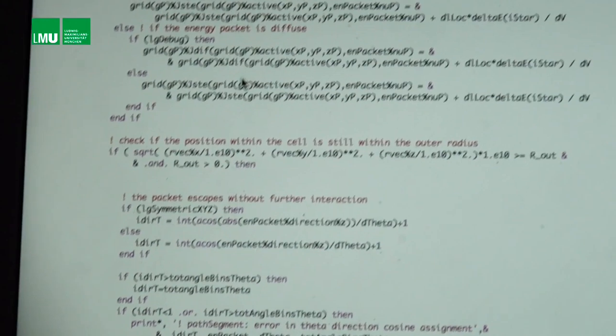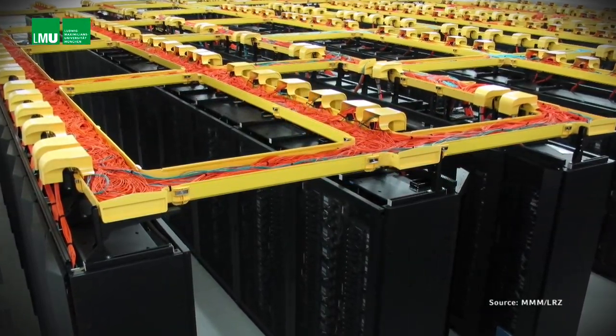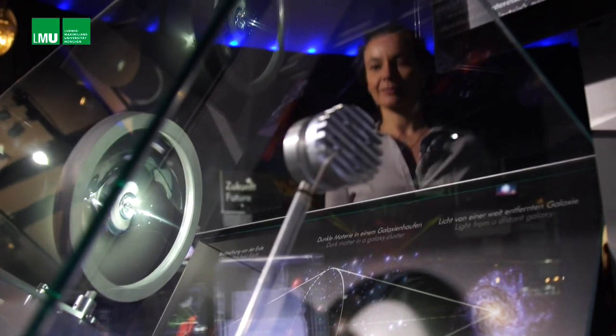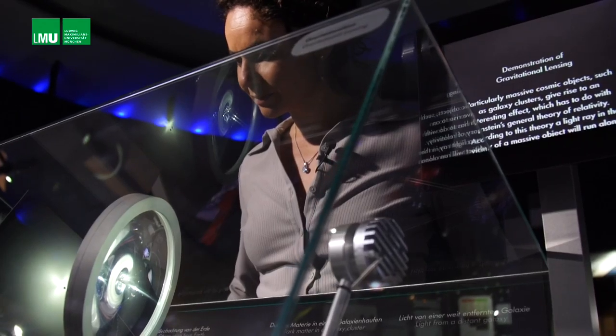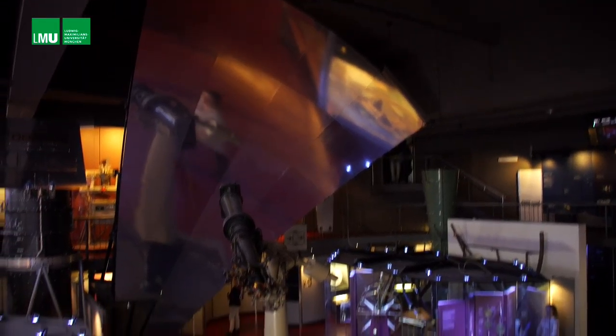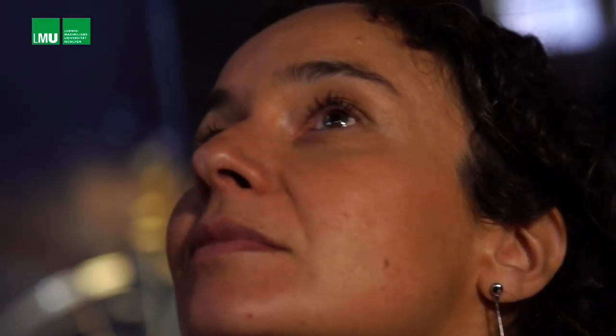In order to study planet formation in detail, Barbara Ercolano simulates the complex processes involved — for example, writing her own algorithms and programs, specifying the initial conditions in the disk, and systematically altering pressure and density distributions. Each simulation requires weeks of processing time on a supercomputer. Ercolano can refine models, comparing the results of simulations with observations made by space telescopes such as Kepler.